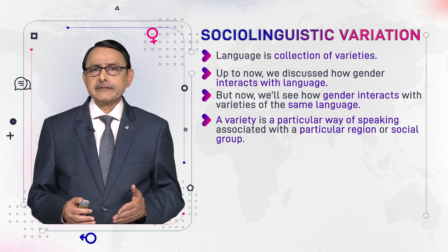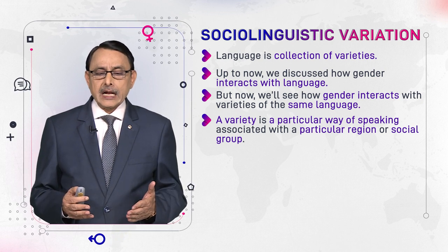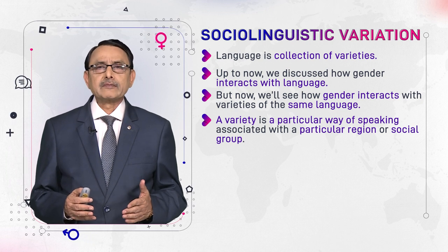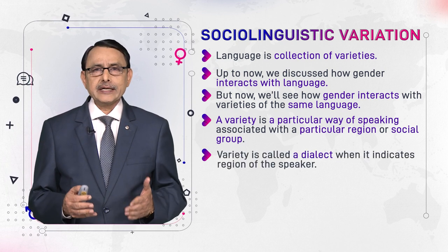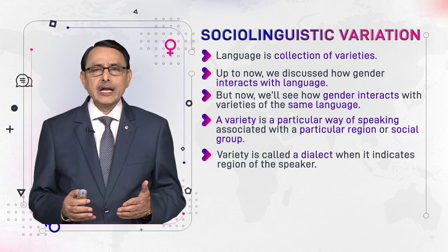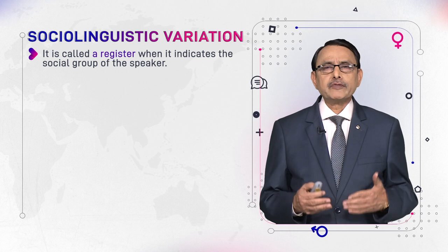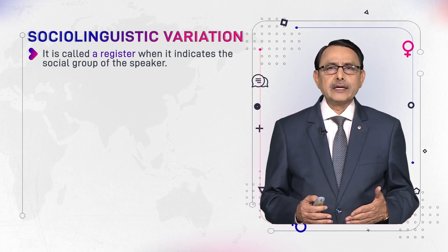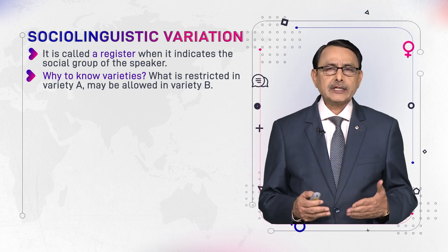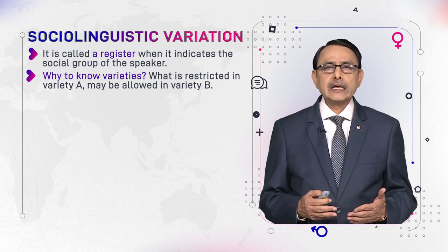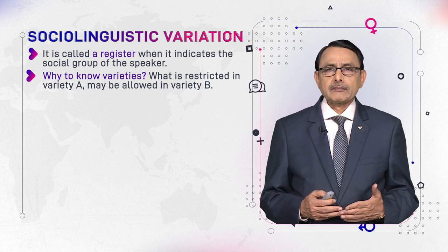First of all, we will define what a variety is. A variety is a specific way of speaking which is associated with some particular region or with some particular social group. If it is related with a region, we call this variety a dialect. If it is related with a social group, professionals, etc., we call it a register.